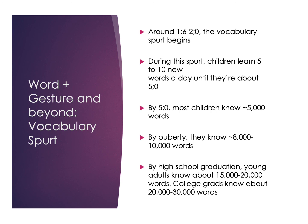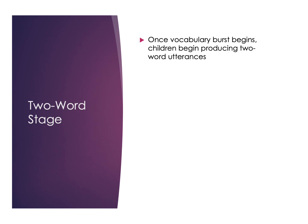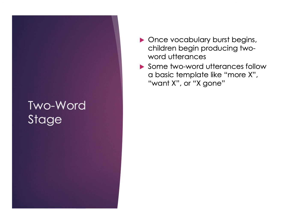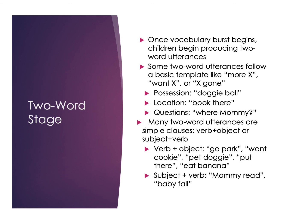You can see how much faster word learning is from age two to five compared with the rest of life. As the vocabulary spurt starts — overlapping with these stages — the two-word stage begins once you have enough vocabulary to start putting things together. These two-word utterances follow basic templates like 'more X,' 'want X,' or 'X gone,' expressing possession like 'doggy ball,' location like 'book there,' or basic questions like 'where mommy.' They resemble simple clauses — a verb and object, or subject and verb — but not quite all together yet: 'go park,' 'want cookie,' 'mommy read,' 'baby fall.'